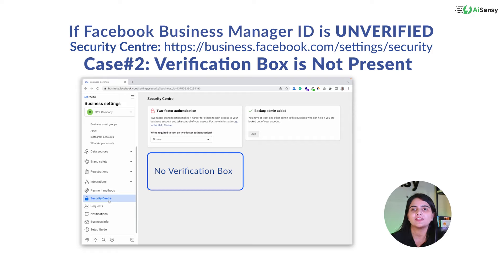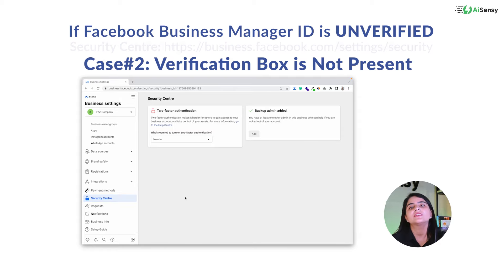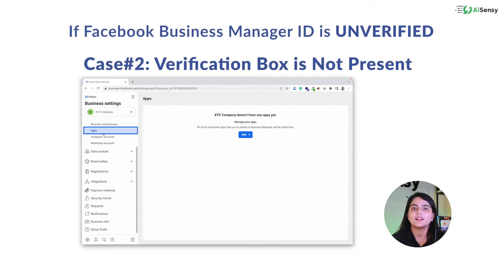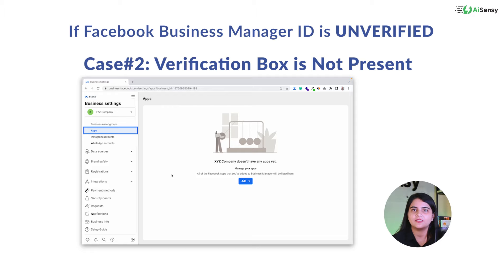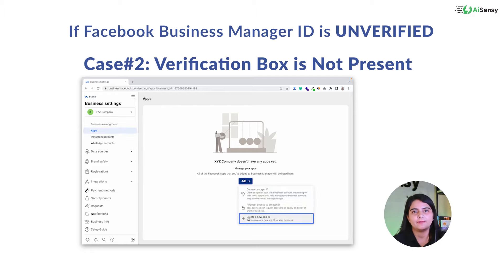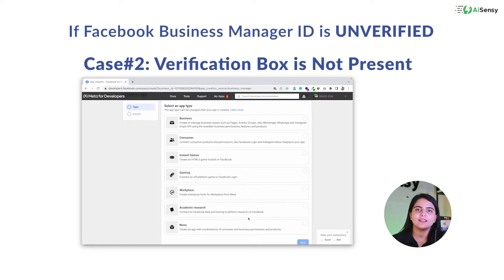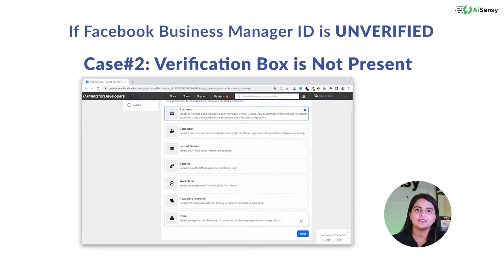I'm sharing the steps to get your start verification button, and then I'll show how to get your Facebook Business Manager ID verified. The first step is to go to Apps under the Account section, then click on Add and create a new App ID. If Create a New App ID is enabled, you can directly click on that, and on the next pop-up, select Business and click on Next.